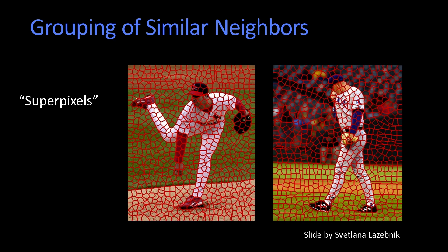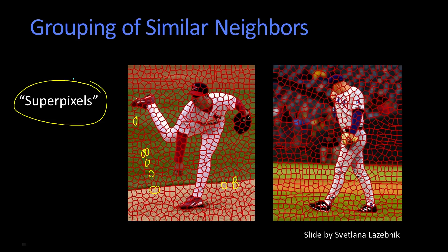Another way of thinking about segmentation — again, some work introduced by Malik's group — is this notion of super pixels. These two pictures that you're looking at here show everything cut up into these little fragments. Within those fragments, everything is sort of the same and within the same region. What that means is when I think about further processing this picture, I don't have to think beyond these little regions, which are referred to as super pixels. The idea is that I go from having tens of thousands or hundreds of thousands of pixels to maybe having hundreds of super pixels, which makes the combinatorics much easier. Getting these super pixels is itself a form of segmentation.